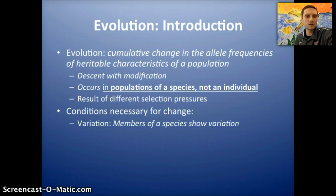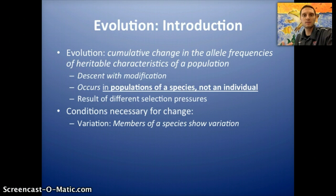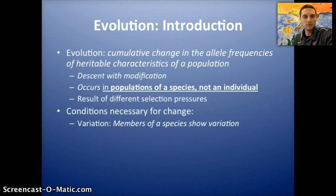The first condition is variation. Members of a species are obviously going to show variation if they're sexually reproducing. If you have siblings or cousins, you probably have some similarities in terms of how you look, your physical appearance, and maybe some behavioral characteristics. Each individual within a species, within a population, is going to be slightly different because of their different DNA.